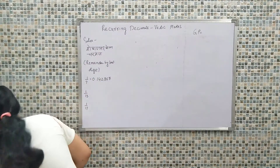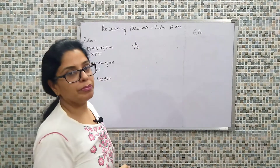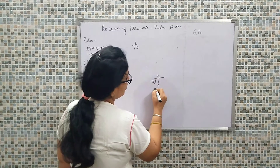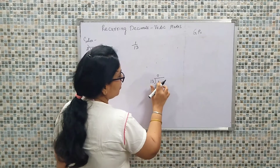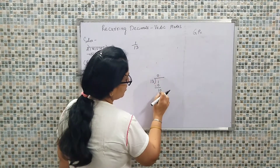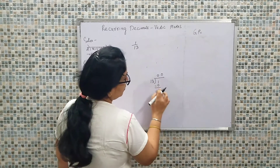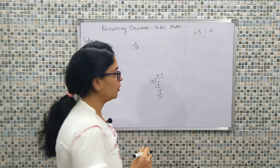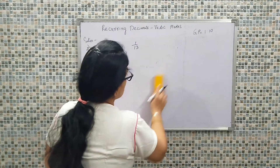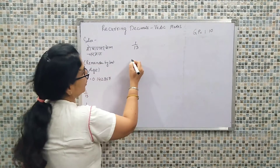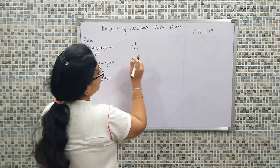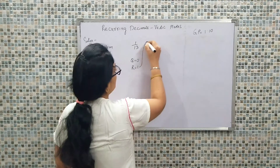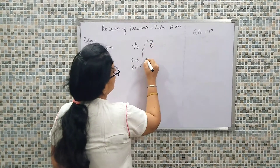The sutra means 'remainder by the last digit'. Now we'll take up the next example: 1 upon 13. For 1 upon 13, we will first derive the GP ratio. 13 goes into 1: quotient is 0, remainder is 1. We put a decimal and add 0, making it 10. So the GP ratio is again 1 to 10 — meaning our multiplying factor is 10. Now: 10 upon 13 — quotient is 0, remainder is 10.